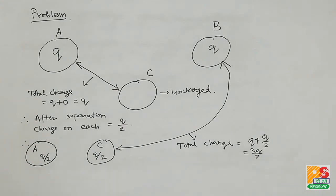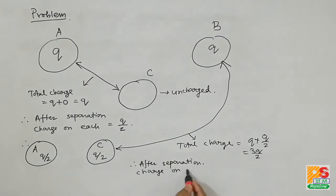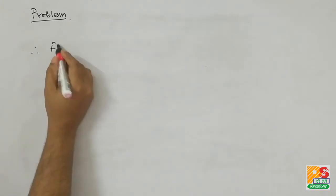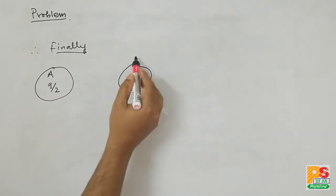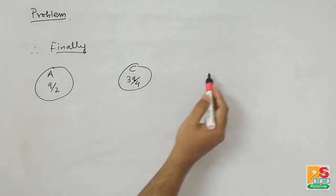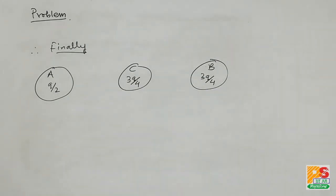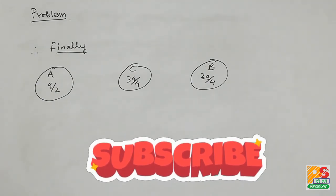Now this C sphere is joined to B and again separated. In this situation the total charge of the system is Q plus Q/2, which is 3Q/2. This charge will be equally shared because B and C are of equal size and shape. So after separation, the charge on each sphere will be half of 3Q/2, that is 3Q/4. Therefore the final situation is: charge on A is Q/2, charge on C is 3Q/4, and charge on B is 3Q/4.